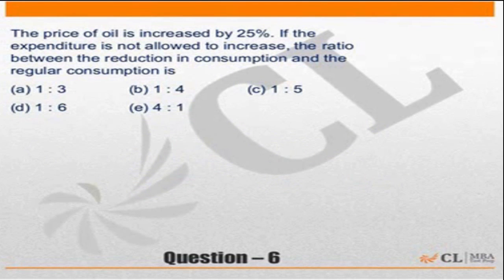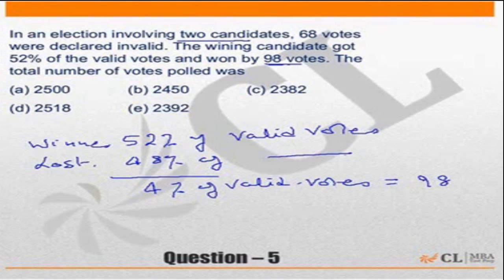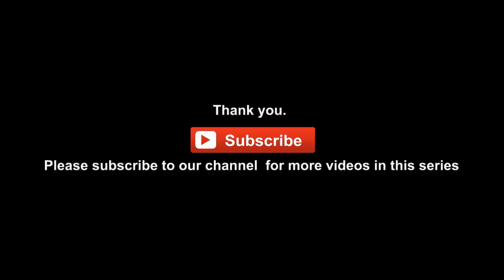Can we solve the problem if the percentage of invalid votes is given instead of the count? Yes, I think we can. For example, if the percentage of invalid votes is 2 percent, that means 98 percent of total votes would be equal to the valid votes, and it can be solved with that information as well.